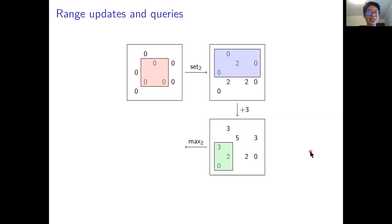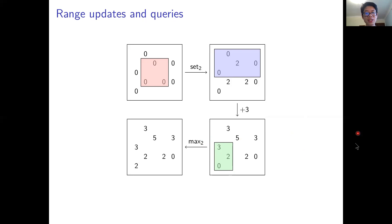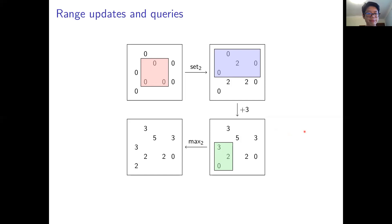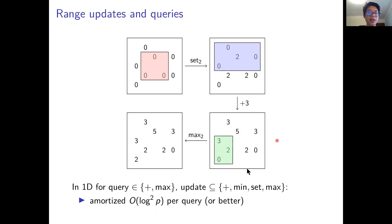Another update, which we call max or maximizer, replaces the value of each point within a range with the maximum of the current value and the update constant. So if the constant is 2, a point with value 0 changes to 2, but a point with value 3 remains unchanged. We also have an equivalent min update. In our work we consider plus, min, set, and max updates, and subsets of these.